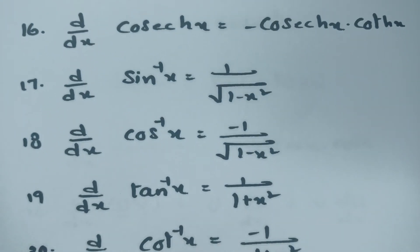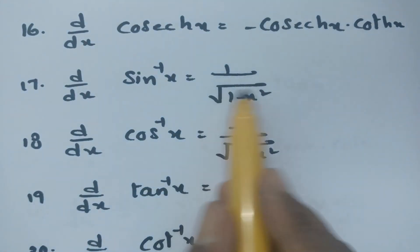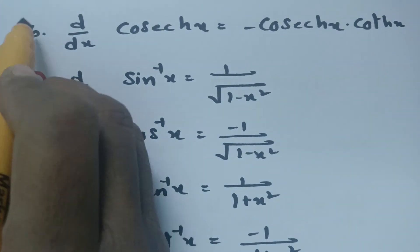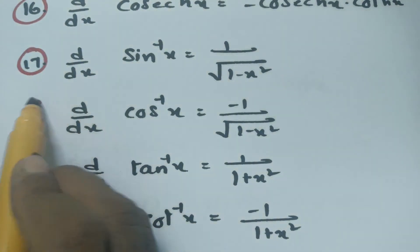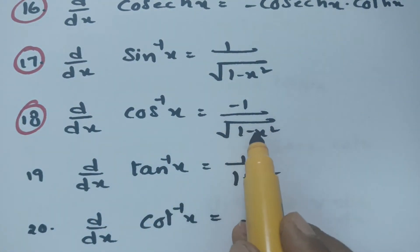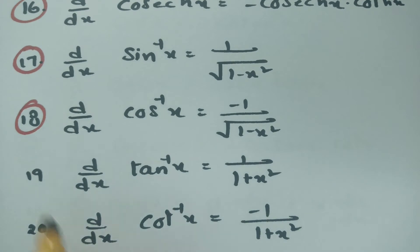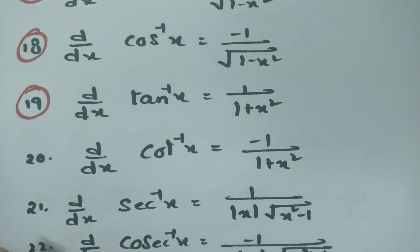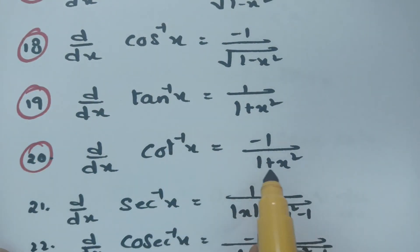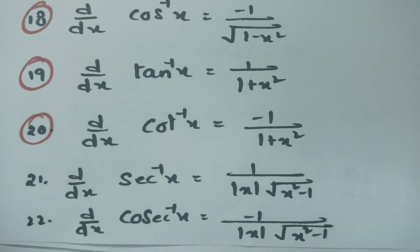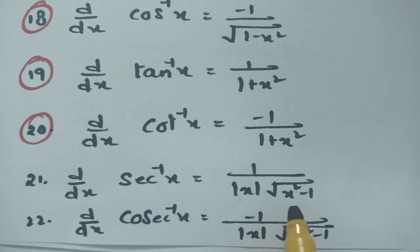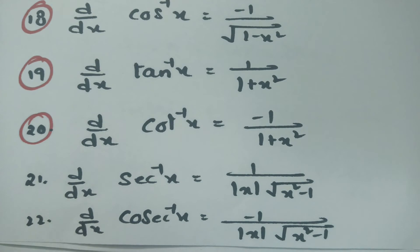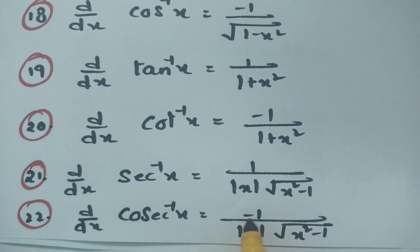The derivative of sin⁻¹x is 1/√(1 - x²), and the derivative of cos⁻¹x is minus 1/√(1 - x²). The derivative of tan⁻¹x is 1/(1 + x²), and the derivative of cot⁻¹x is minus 1/(1 + x²). The derivative of sec⁻¹x is 1/(|x|·√(x² - 1)), and the derivative of cosec⁻¹x is minus 1/(|x|·√(x² - 1)).